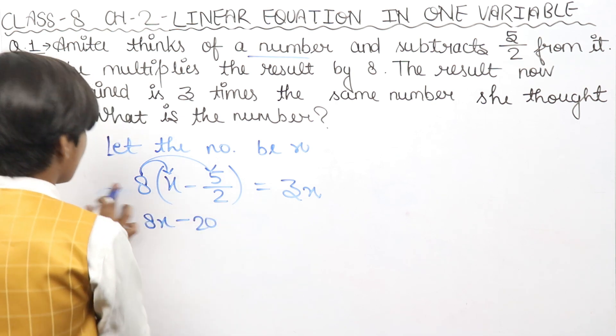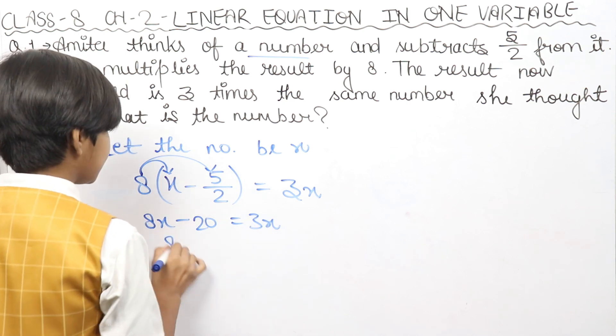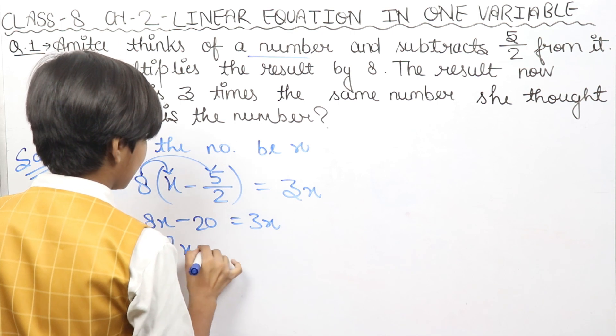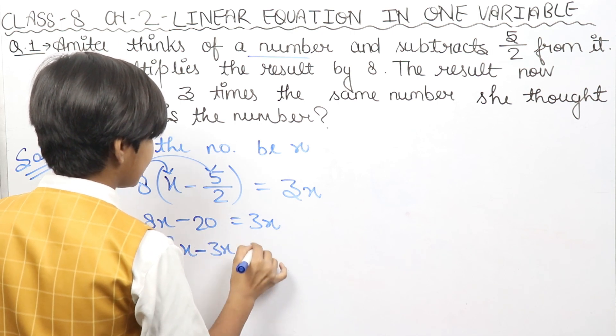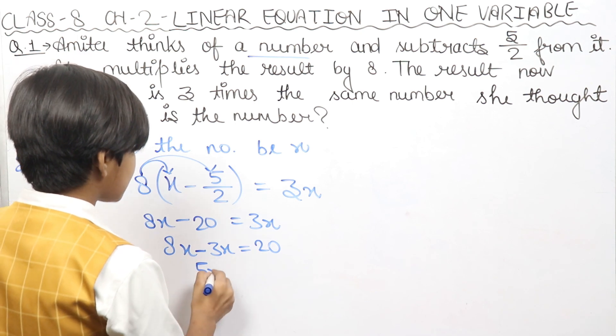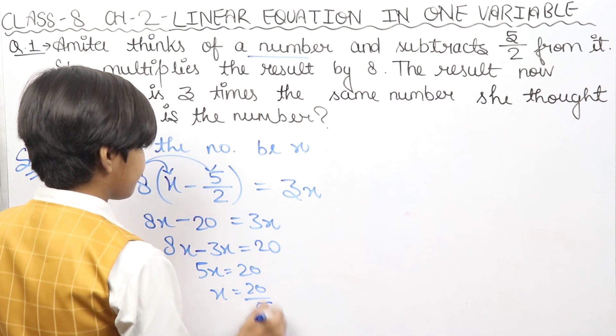8x minus 20 equals 3x. Now we will send 20 to this side. No, then we will bring 3x here. Because the variable needs to be on one side and we will take 20 to this side. So 5x equals 20, and x equals 20 divided by 5.